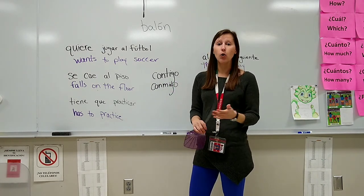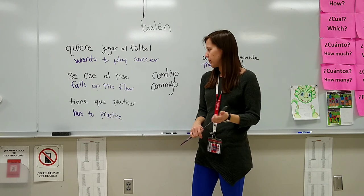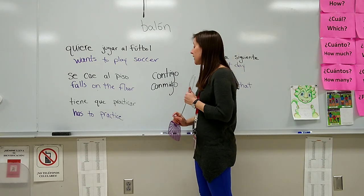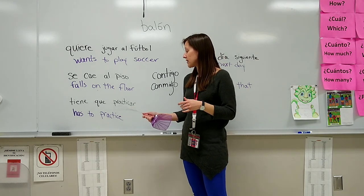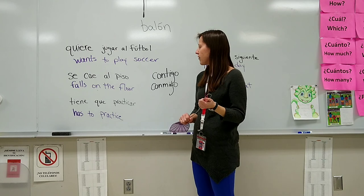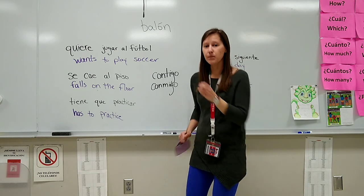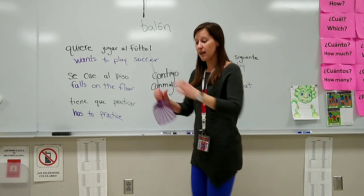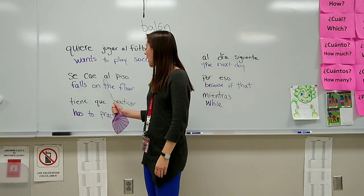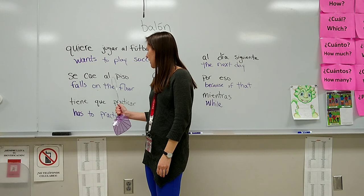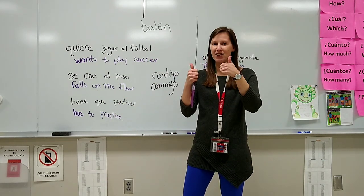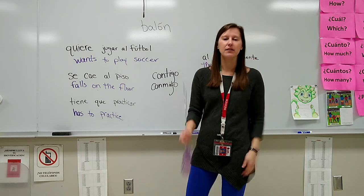Entonces, por fin, Olivia practica. Ella practica y practica con su amiga. Olivia tiene que practicar muchísimo porque no tiene talento. Por fin, cuando Olivia corre hacia el balón, ella no se cae al piso. ¡Y tiene talento! El fin. ¡Gracias!